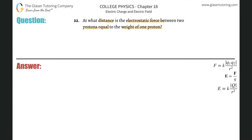So basically all we have to do is set up a math equation from what they're saying. They're saying that the electrostatic force F sub E should equal the weight of one proton. The electrostatic force is simply the electrostatic constant K multiplied by the absolute value of the product between the two charges, divided by their separation distance R squared. And that will equal the weight of one proton.